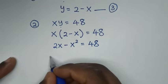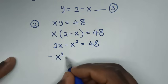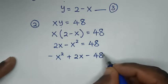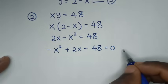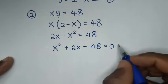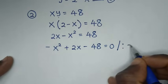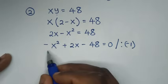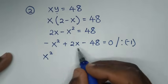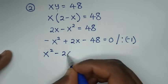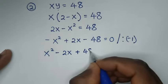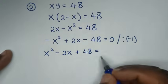Rearranging: negative x squared plus 2x minus 48 equals 0. In the next step, we make the x squared term positive by dividing the whole equation by negative 1. So negative x squared divided by negative 1 is positive x squared; positive 2x divided by negative 1 is minus 2x; and minus 48 divided by negative 1 is positive 48. This gives x squared minus 2x plus 48 equals 0.